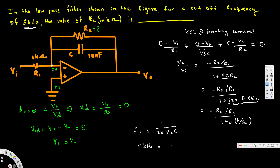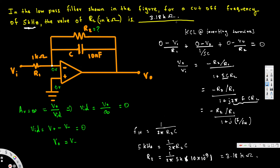Setting 5 kilohertz equal to 1 over (2π·R2·C), we solve: R2 equals 1 over (2π times 5k times C). The provided capacitance is 10 nanofarads, so 10 times 10 to the power of minus 9 farads. That gives us R2 equals 3.18 kilo-ohms. So that's the resistance, 3.18 kΩ, and that's how we do this kind of problem. I hope this helps, thanks for watching.